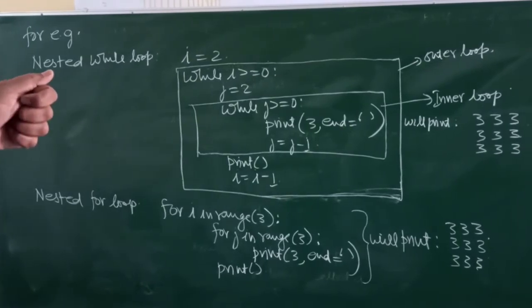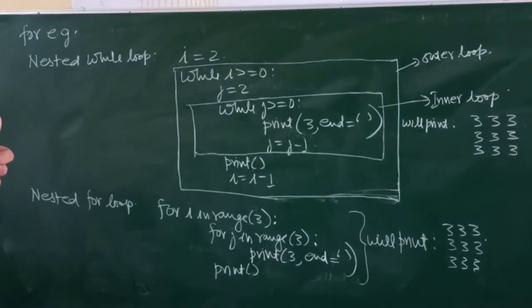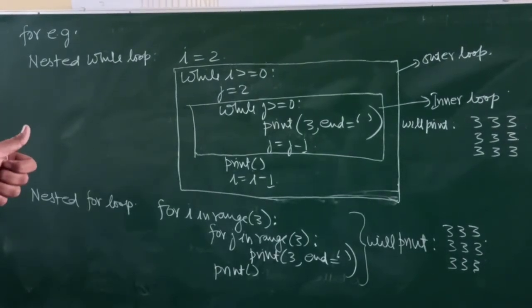comma, and equals to space, j equals to j minus 1, print, empty print statement, i is equals to i minus 1.